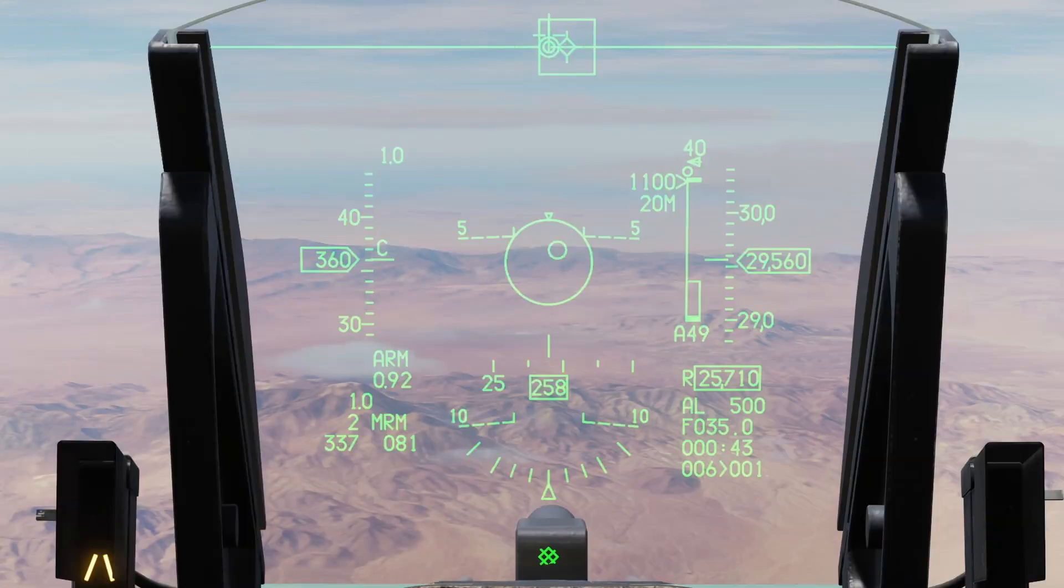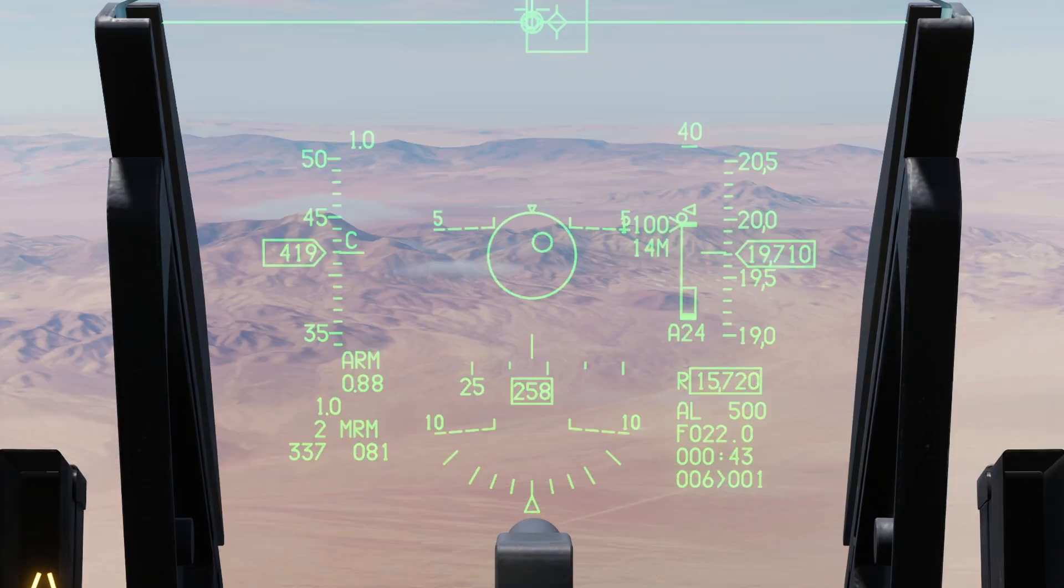Here we see our heads-up display for the F16. Off to our right, we have our symbology to let us know when our target is in the WEZ. And here we see we have a launch opportunity at about 35 miles while we're at 30,000 feet. Now when we try it again at the same true air speed but at a lower altitude, our launch indication shows up at 22 miles.